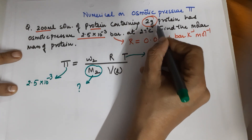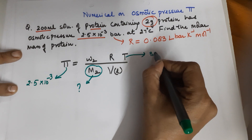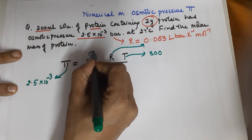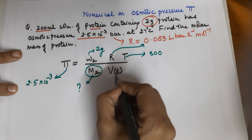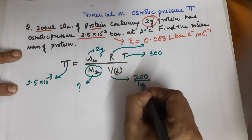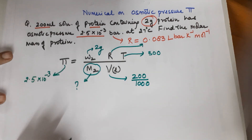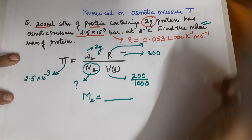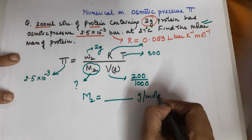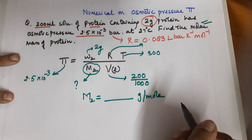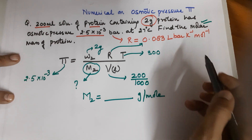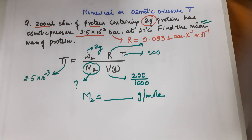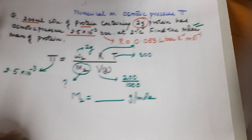Substituting all values: π = 2.5 × 10⁻³ bar; temperature is given in °C so add 273 to get 300 K; R = 0.083; weight of solute w₂ = 2 g; volume = 200 mL = 200/1000 L. Solve for M₂. The answer must be reported as grams per mole since molar mass is asked — not in atomic mass units.